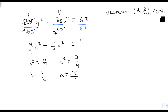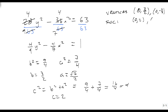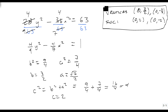The foci come from finding c. Since c squared equals b squared plus a squared, we have 9/4 plus 7/4, which is 16/4, which is 4. So c is 2. That means my foci are at (0, 2) and (0, -2). And now I have correctly found all of the information: the vertices and the foci.